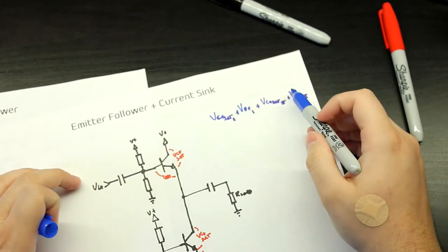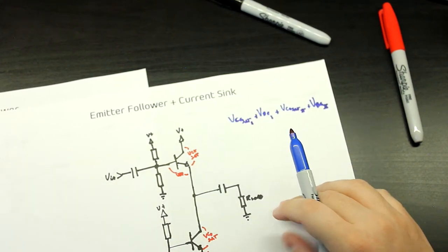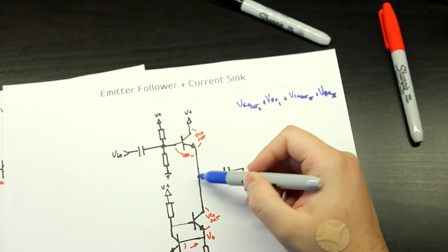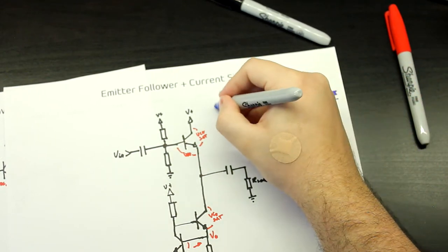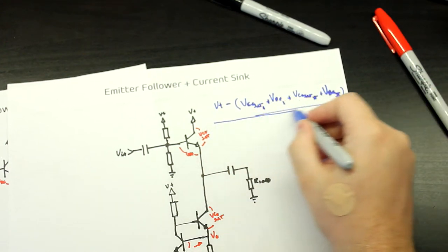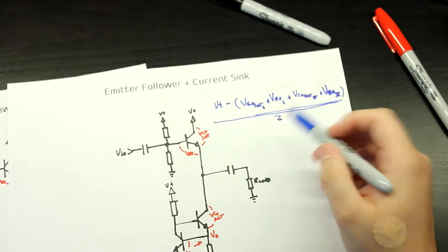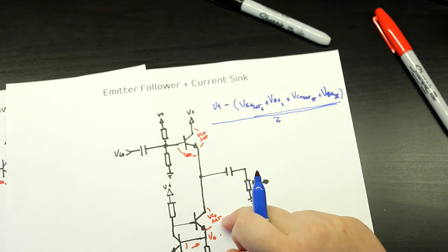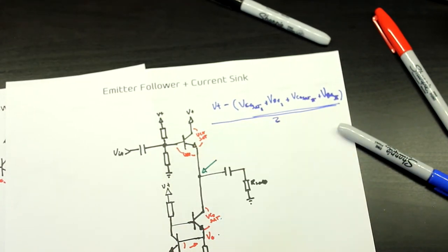Now you sum this up and subtract from your supply voltage. That gives you the maximum voltage swing at this point. It doesn't give you the value you should put here. Now that you have this value, you subtract this whole thing from your supply rail, then divide by two to get the midpoint of this voltage. To get the point you want, you sum VBE of this transistor plus VCE sat of this one plus the voltage you have here, and you get the voltage needed at this point.